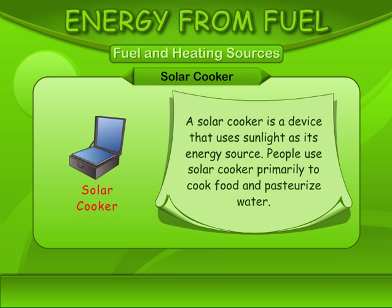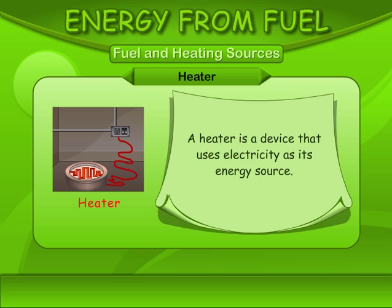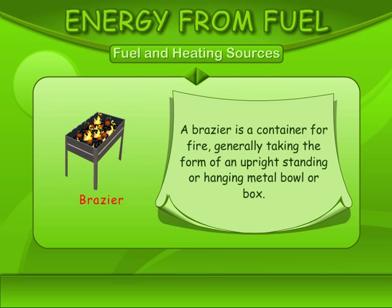A solar cooker is a device that uses sunlight as its energy source. People use a solar cooker primarily to cook food and pasteurize water. A heater is a device that uses electricity as its energy source. A brazier is a container for fire, generally taking the form of an upright standing or hanging metal bowl or box.